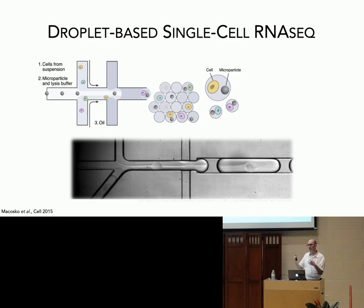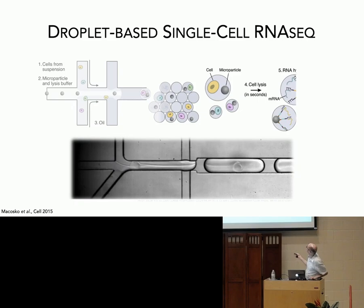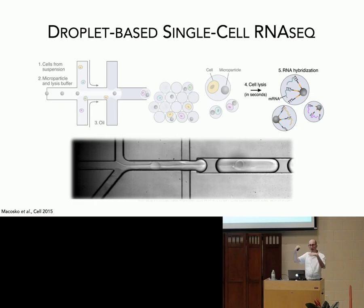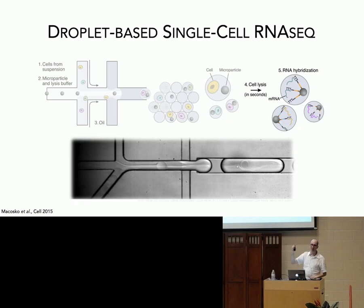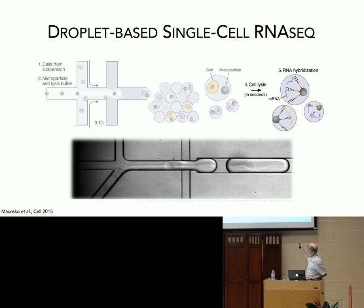Once it goes into that droplet, chemicals are put in to basically open up the cell and free all of the mRNA molecules — the transcripts that are in there. Those can bind to these microparticles which are covered in DNA probes that can recognize the transcripts for different genes, and they capture as many of these transcripts as they can.